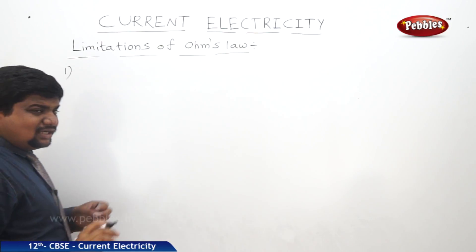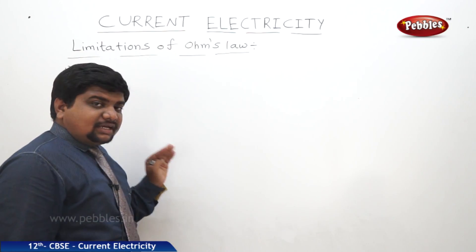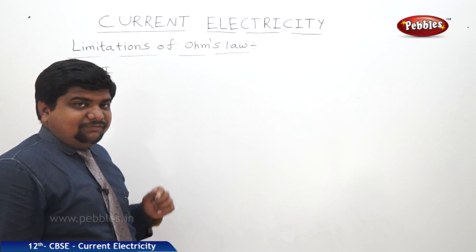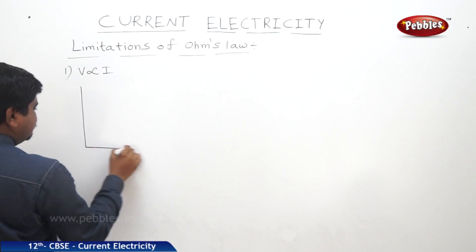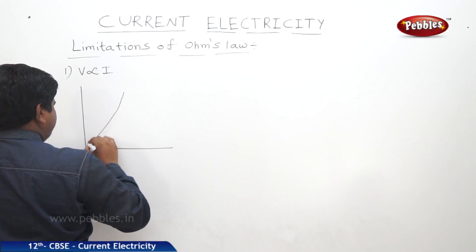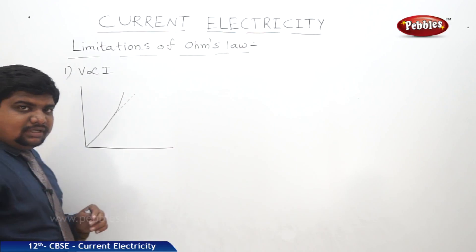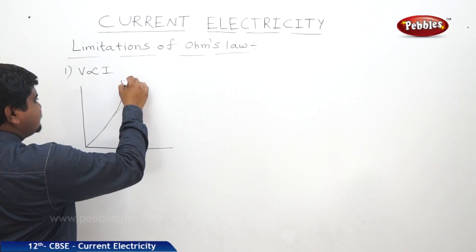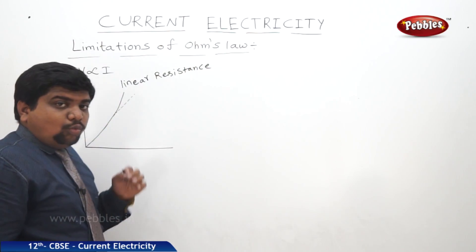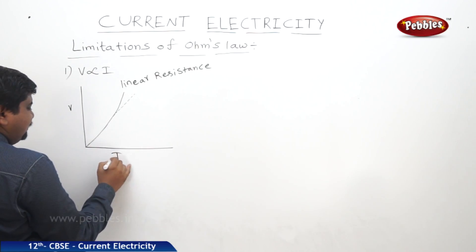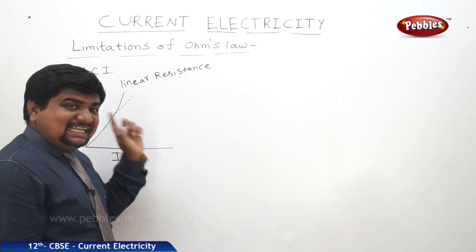The first basic rule to understand Ohm's law is that V is proportional to I and the V/I ratio is constant. The graph should be a straight line passing through the origin. However, sometimes if a conductor has insufficient resistance, the graph will deviate. The solid line represents linear resistance, while the dashed line represents the actual plotted V-I graph. Here V ceases to be proportional to I.